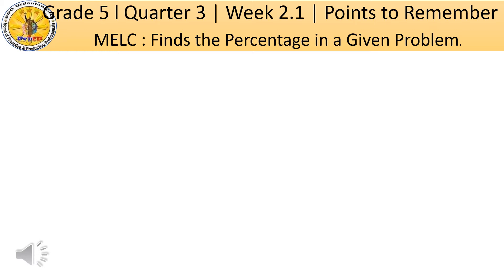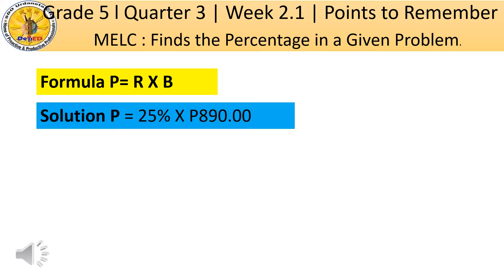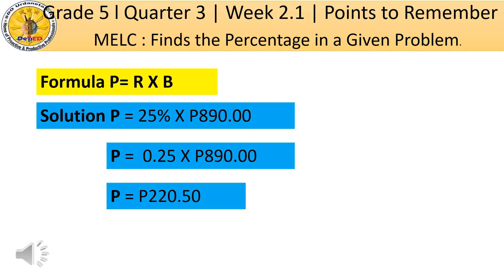This is the formula in finding the percentage: P equals R times B. The solution is P equals 25% times 190 pesos. Then we will rewrite 25% to decimal form. So P equals 25 hundredths times 190 pesos. So the percentage is 47 pesos and 50 centavos.